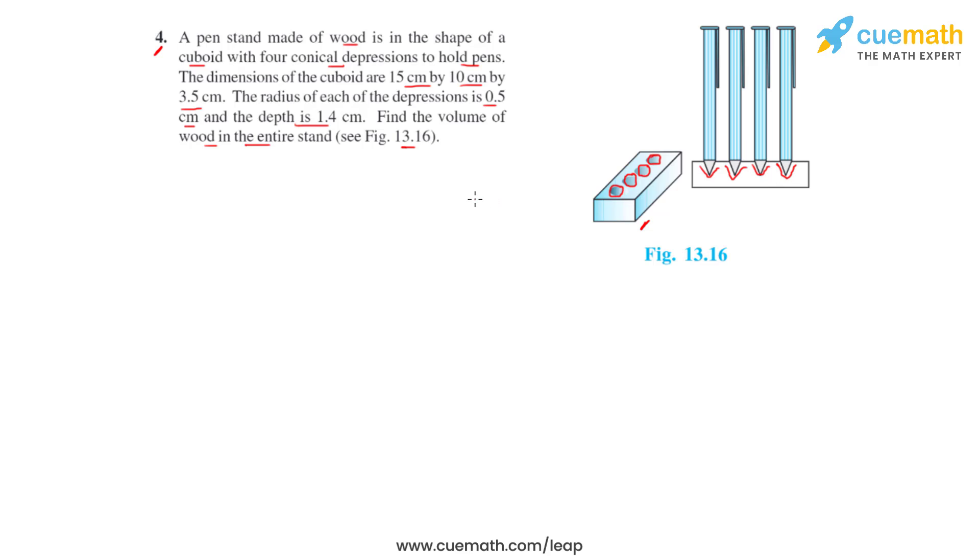So to get the total volume of the wood in the entire stand, we will have to subtract the volume of these four conical depressions from the volume of the entire cuboidal wooden block that we have.